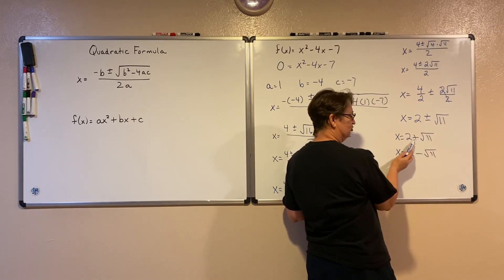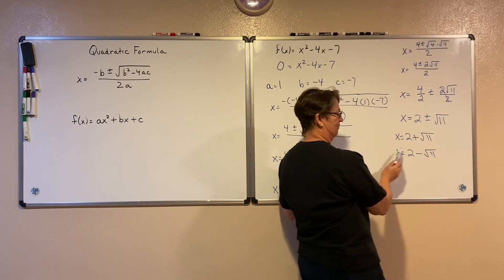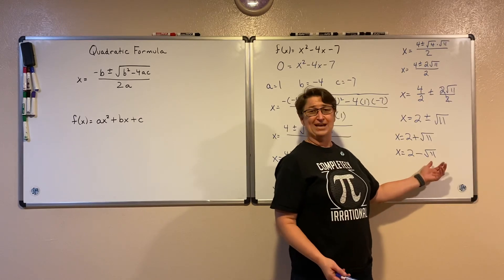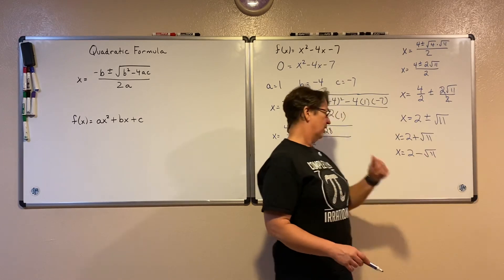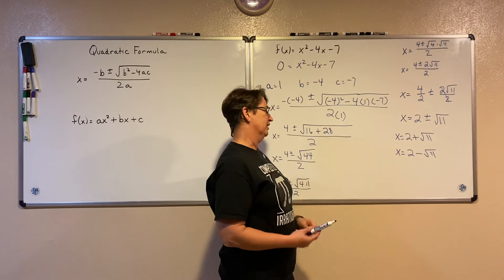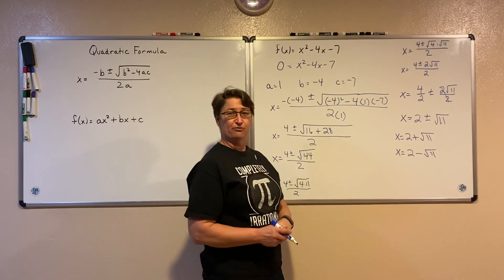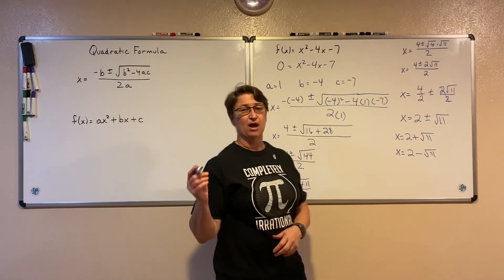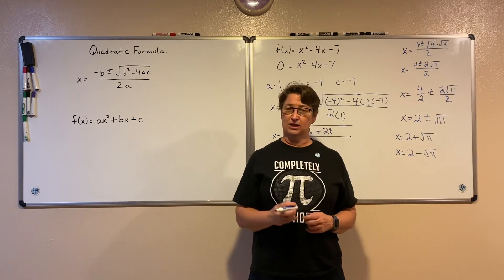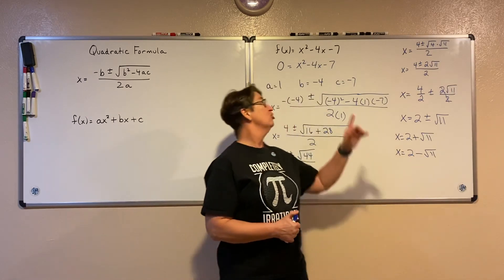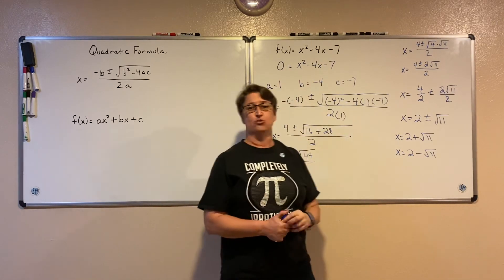It means I have two answers, a plus version and a minus version. So here it's 2 minus 3 and a little bit, so we're at a negative, a little bit, 1, 1 and a little bit. So those are our x values. And that's how we use the quadratic formula to help us to solve for x in a quadratic when our quadratic is set equal to zero.